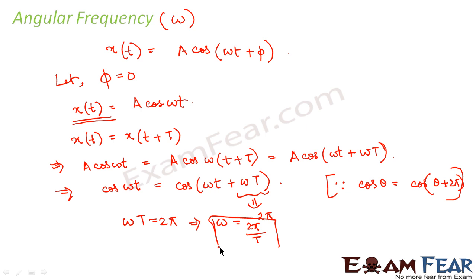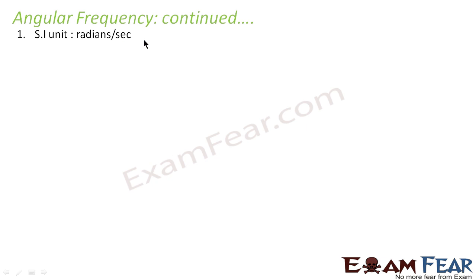So we can say that angular frequency is related to the time period of the oscillatory motion — that is, omega is equal to 2π by T. This is how we define the angular frequency of an oscillating particle. The SI unit of angular frequency is radians per second. That is very obvious because angular frequency is 2π divided by T: 2π is measured in radians and time is measured in seconds, so the SI unit becomes radians per second.